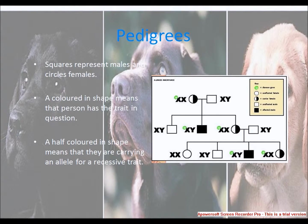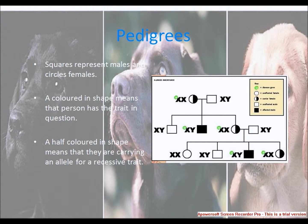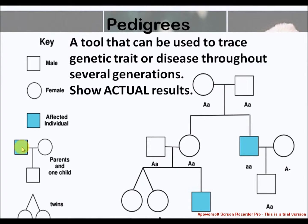The pedigree is a visual tool for documenting the biological relationships in families and determining the mode of inheritance of genetic diseases. Pedigrees are most often constructed by medical geneticists or genetic counselors. A pedigree is a tool that can be used to trace genetic traits or diseases across several generations.